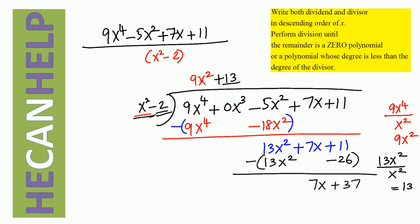Why can't we go further? What is the degree of 7x plus 37? It is 1. What is the degree of x squared? It is 2. We perform division until the remainder is a zero polynomial or a polynomial whose degree is less than the degree of the divisor. Right now we have degree less than the degree of the divisor, so we stop.